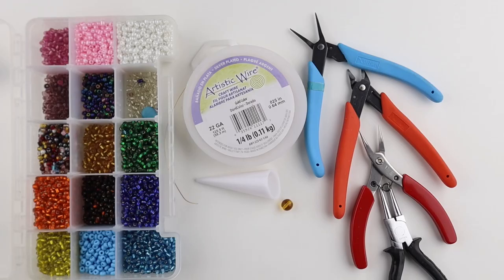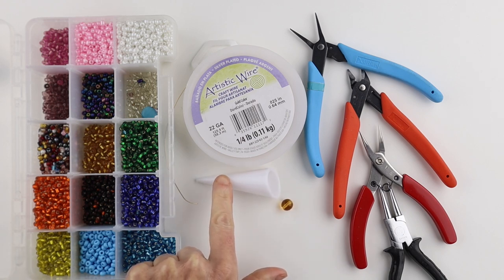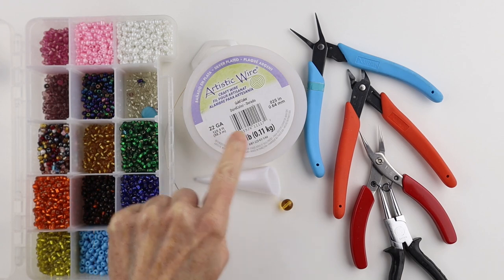What you're going to need for this project are seed beads, a larger round bead for the middle, a round form or a ring cone, 22 gauge wire, and your tools.